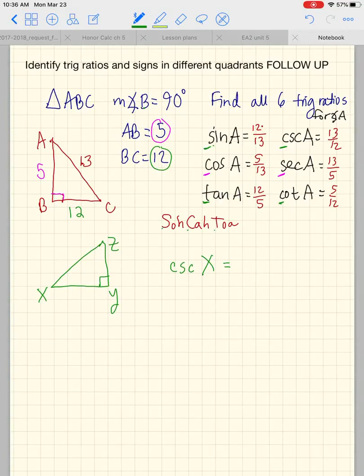But sine's reciprocal is cosecant. Cosine's reciprocal is secant. And tangent's reciprocal is cotangent. So if I'm looking for cosecant of an angle, I really need to know what the sine of the angle is.